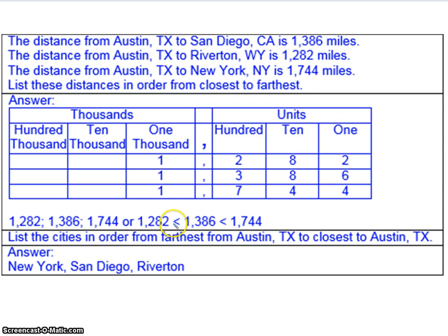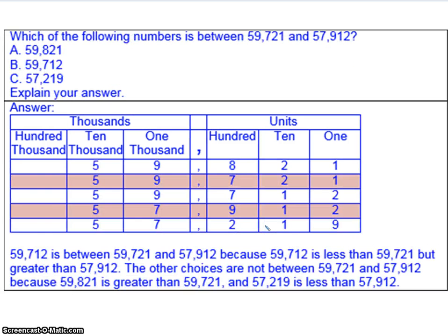In math, we use comparison symbols to show this. The arrow always points to the smaller number — this is called a less than symbol when pointing left. So 1,282 is less than 1,386, which is less than 1,744. In a final example, we use a place value chart to find which of three numbers falls between 59,721 and 57,912, going from left to right to see which ones fall in between.